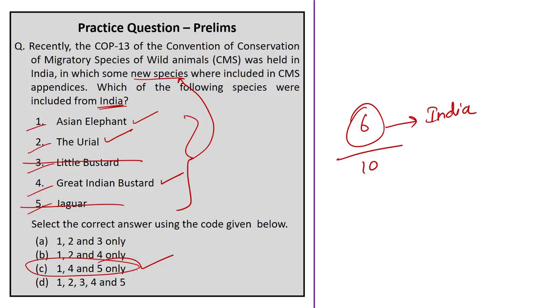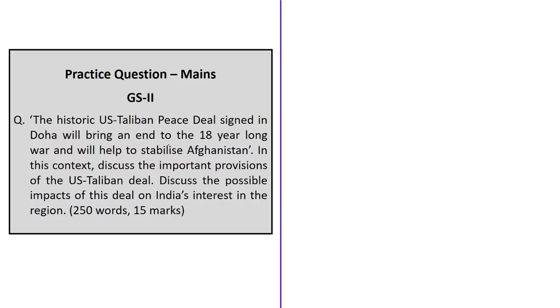The question based on CMS asks which species were included from India in COP 13. While all five listed species — Asian elephant, Uriel, little bustard, Great Indian bustard, and jaguar — were added to CMS appendices, not all are from India. The little bustard and jaguar are not from India. From India, six species were added: Asian elephant, Great Indian bustard, Bengal florican, oceanic whitetip shark, Uriel, and smooth hammerhead shark. The correct answer is option C — 1, 4, and 5 only. Asian elephant and Great Indian bustard were added to Appendix 1, while Uriel was added to Appendix 2.